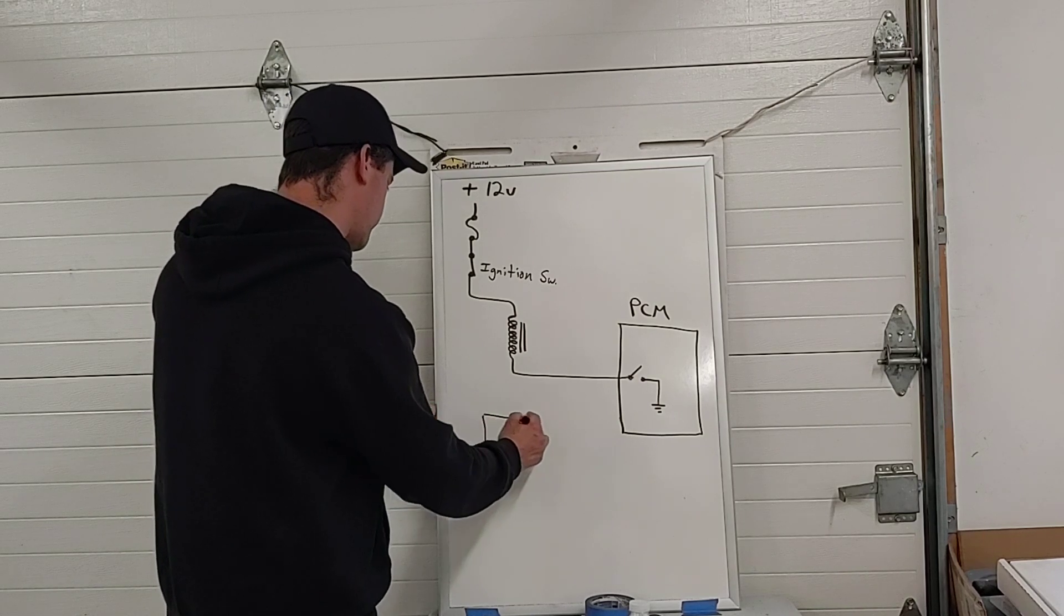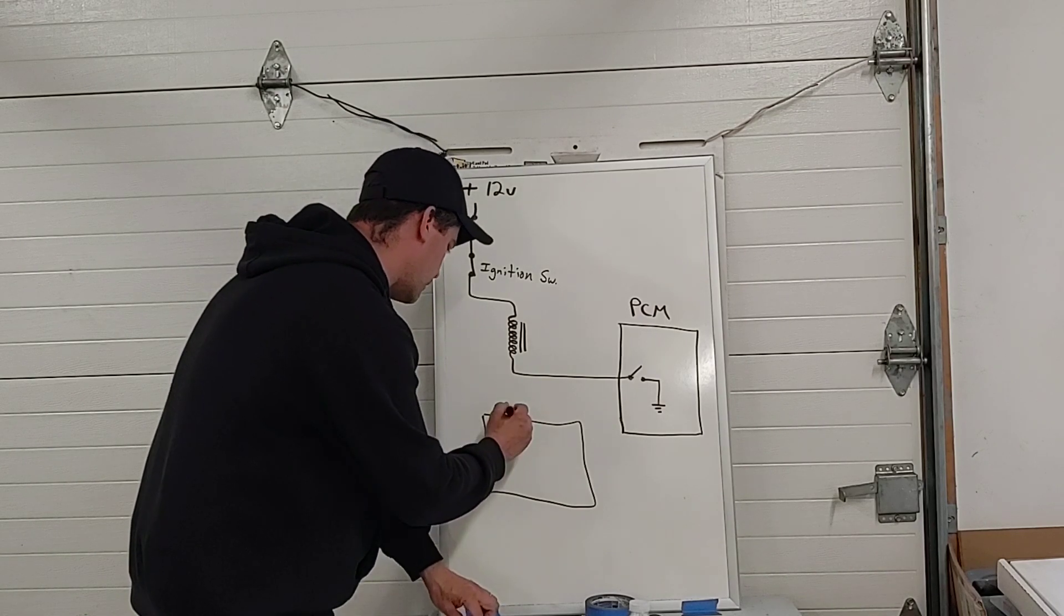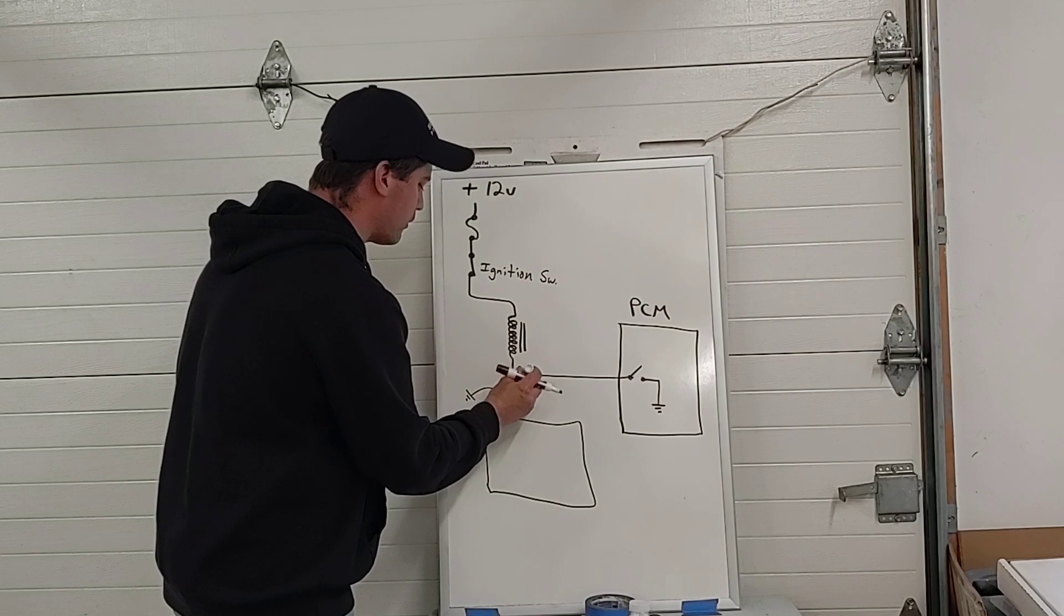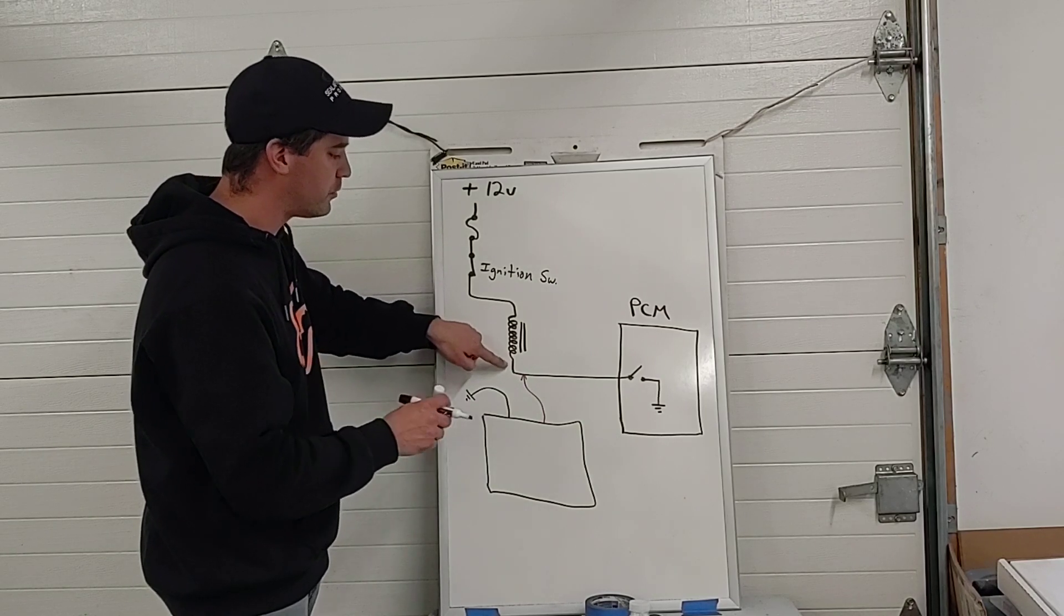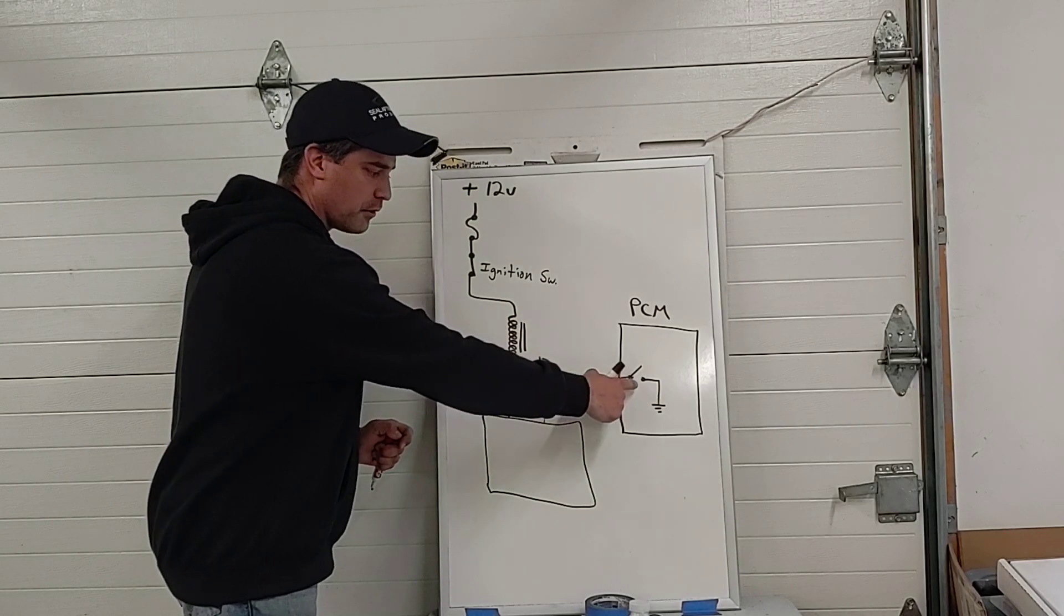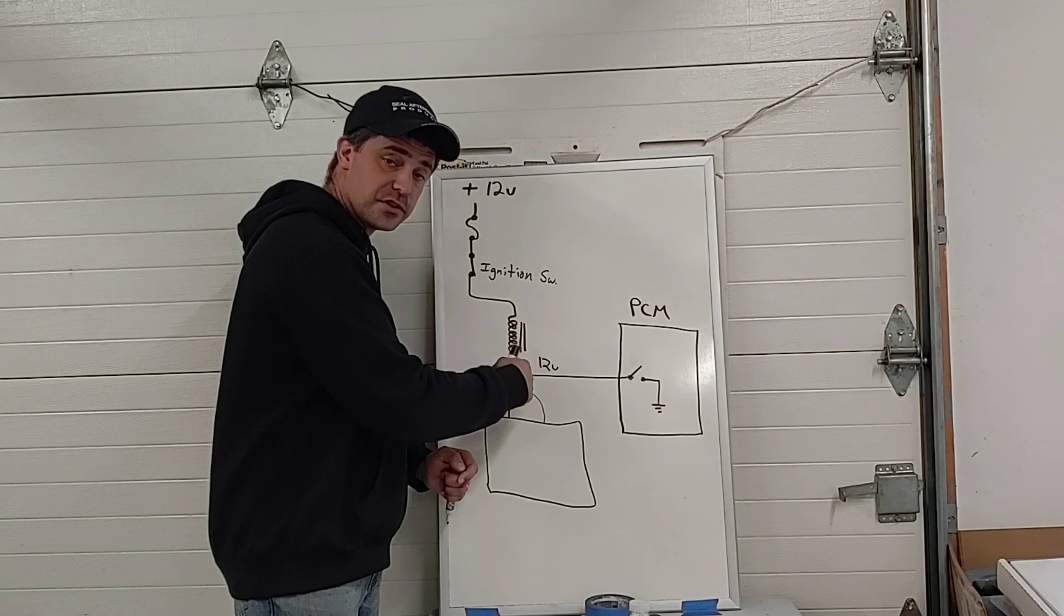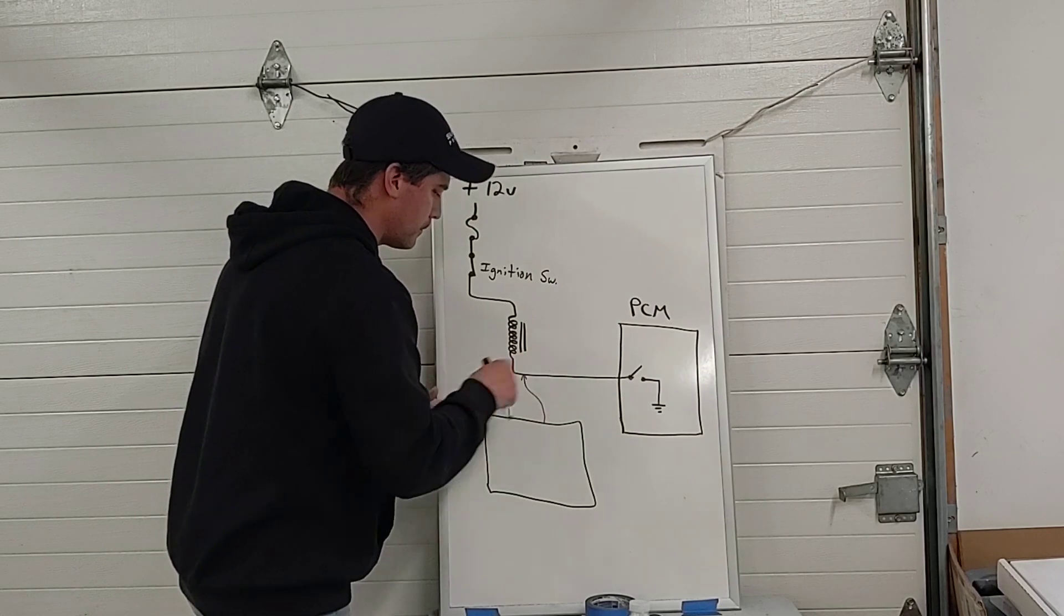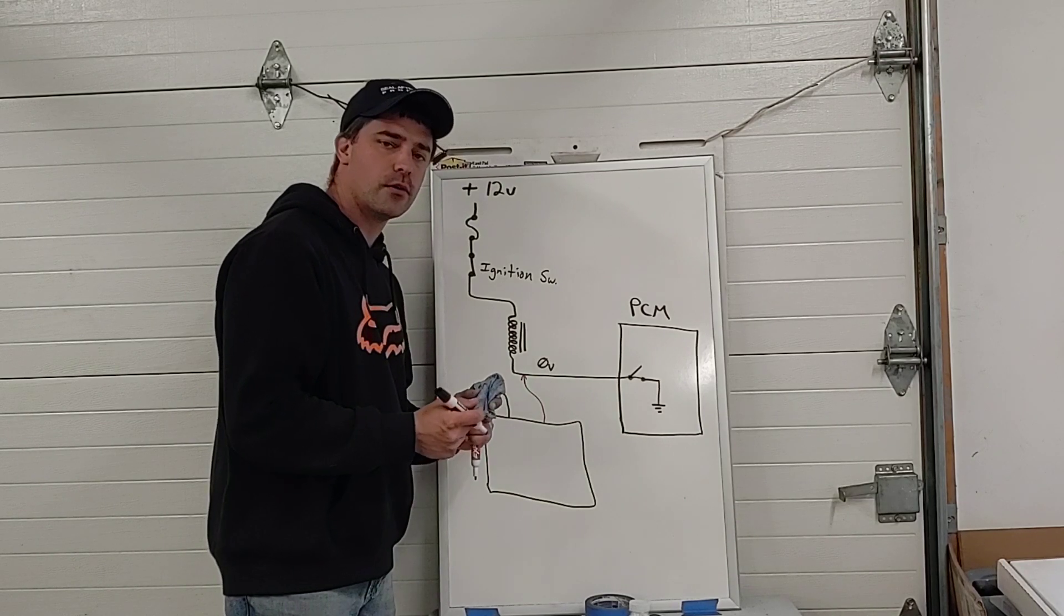If we were to take our oscilloscope and hook it up, we would connect the negative lead of our oscilloscope to ground and we would connect the positive lead of our oscilloscope to the ground side of the injector. And what that's going to do is it's going to show us 12 volts when the injector is off because there is no ground. And as we learned with basic electricity, there'll be voltage available up to and open. It's going to show us zero volts when the injector is on or grounded.